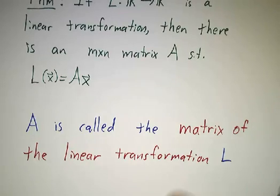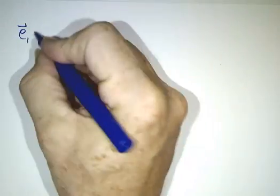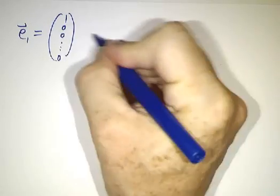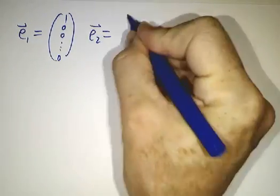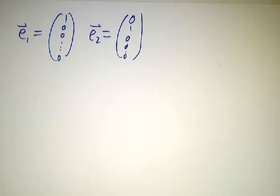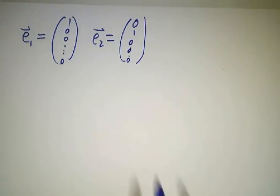So let's see why that works. For that, we'll need a little bit of notation. In Rn, let's define some basis vectors. E1 is just the vector (1, 0, 0, ...), and E2 is (0, 1, 0, ...). In general, Ek is going to have a 1 in the kth slot and a 0 in every other slot.